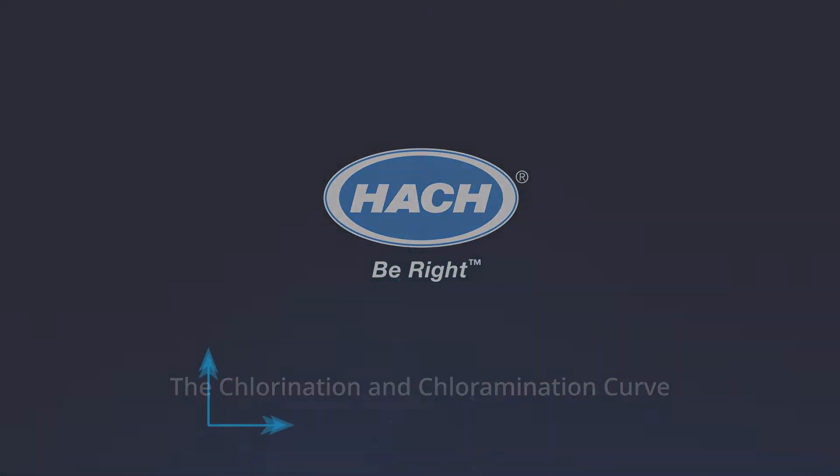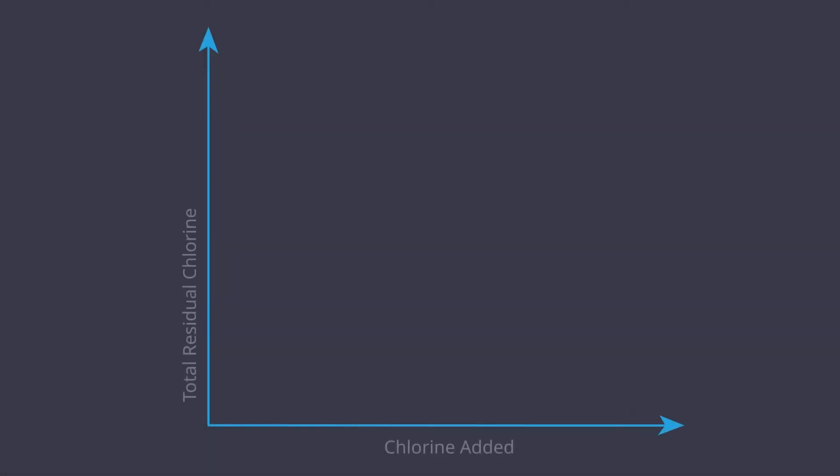To understand chlorination and chloramination control, let's start with a simple line that shows measured chlorine levels and the amount of chlorine that is added to the water.